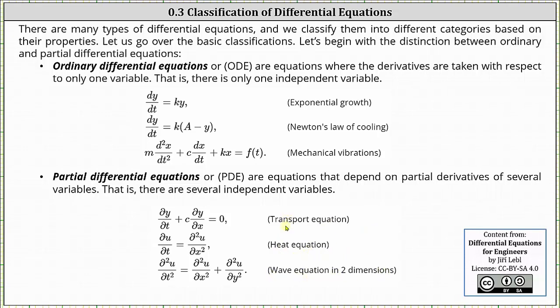For the transport and heat equation, the partial derivatives are taken with respect to two variables, the variables t and x. And for the wave equation, the partial derivatives are taken with respect to three variables: t, x, and y.